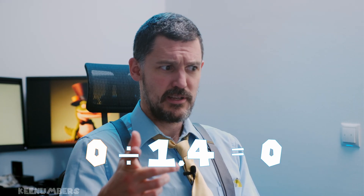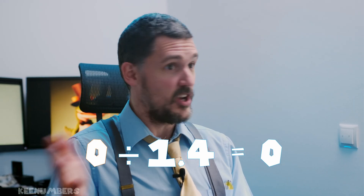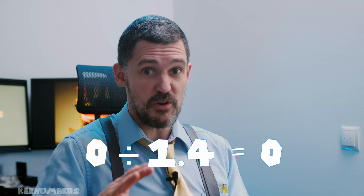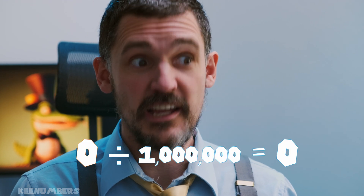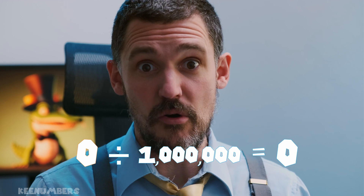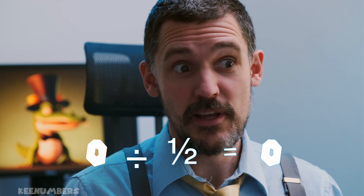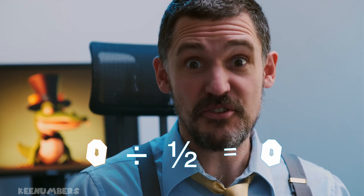When you divide zero by anything other than zero, it's still zero. It doesn't matter if you divide zero into a million pieces — it's still zero. You can divide zero into halves; it's still zero.